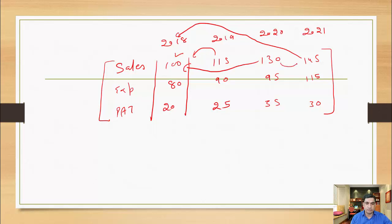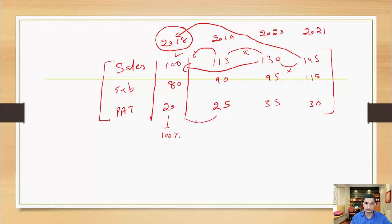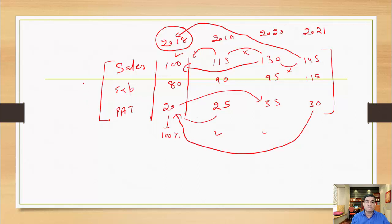We are not comparing each year to the previous year — that would be horizontal analysis. In trend analysis, every growth rate is calculated keeping 2018 as the base year. So we compare 2019 to 2018, 2020 to 2018, and 2021 to 2018. From these comparisons, we create a trend line and a trend chart, which I'll show you as well.